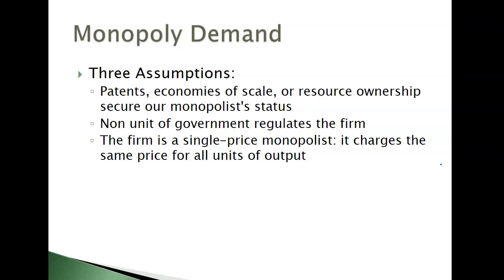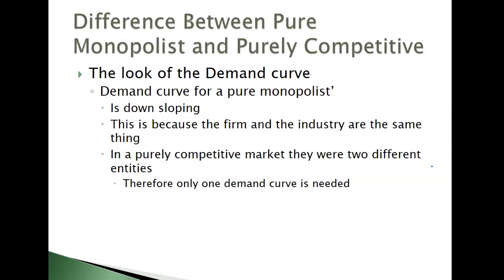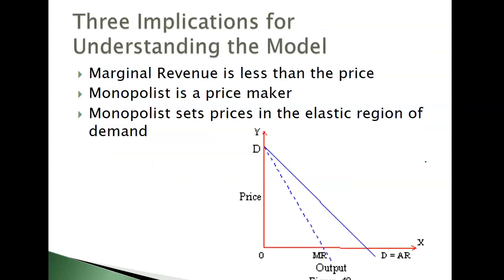Everybody faces the same price. The demand curve is the industry demand curve, just like supply and demand — it's the entire industry's demand curve, so it is downward sloping. In pure competition, the industry's demand curve was downward sloping, but the firm's demand curve was horizontal because they were the price receiver. Here, because the demand curve is downward sloping, and now we've added marginal revenue, the MR curve will be below the demand curve at every unit except the first, where they are equal. Monopolists also set their prices in the elastic region of their demand curve.